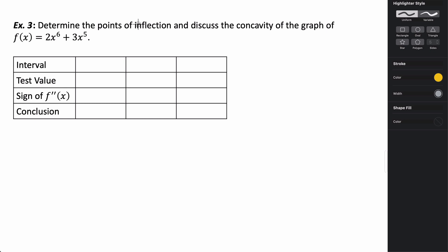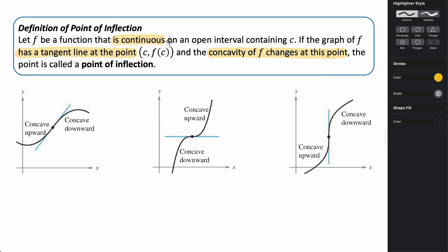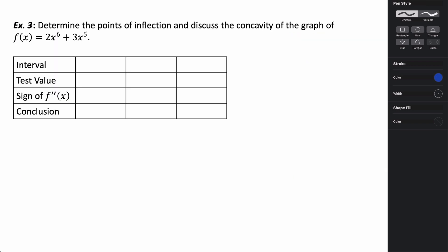In example three, we want to determine the points of inflection and then discuss the concavity of our graph. When looking at points of inflection, we have to see that the concavity changes at that point. We're going to test concavity by looking at the second derivative, then determine if the function exists there so that we have a point of inflection.